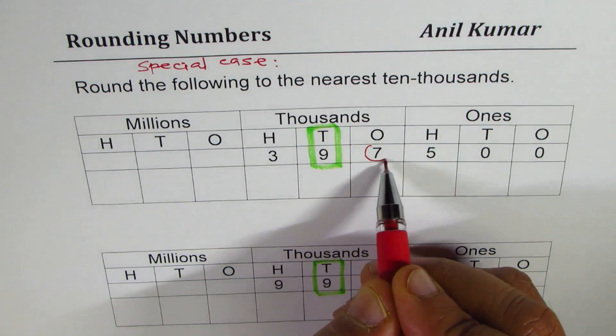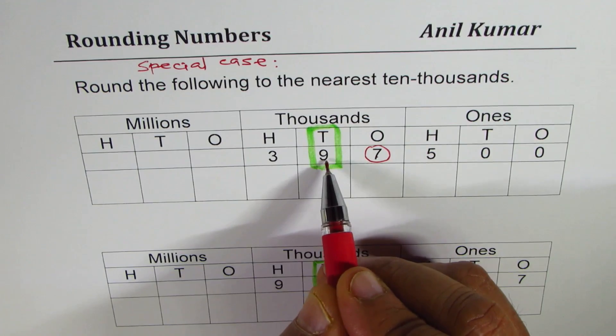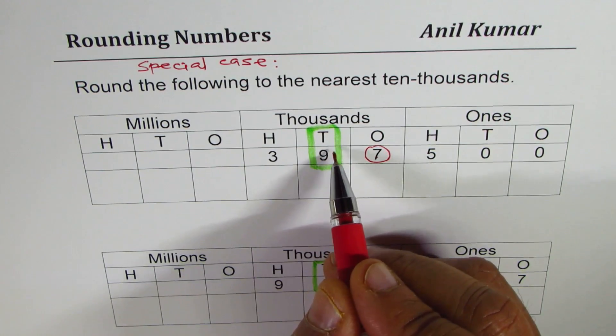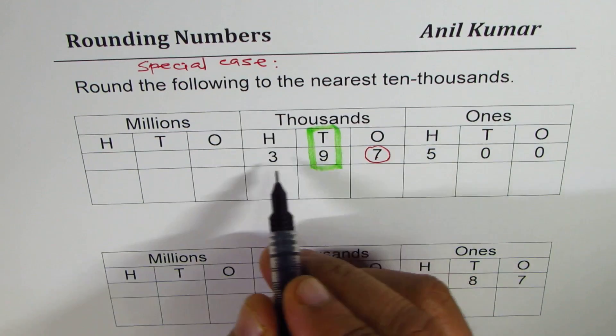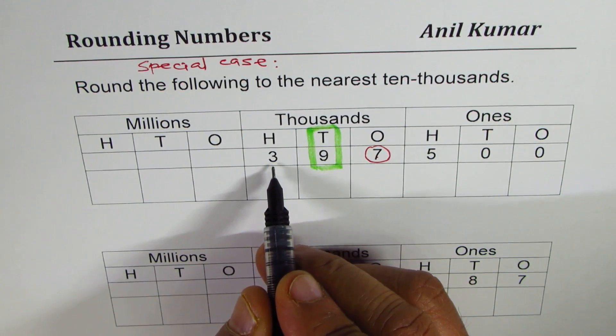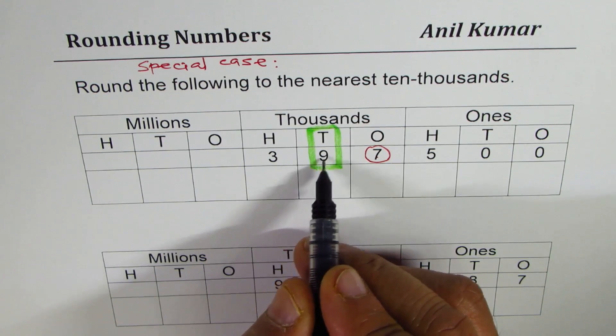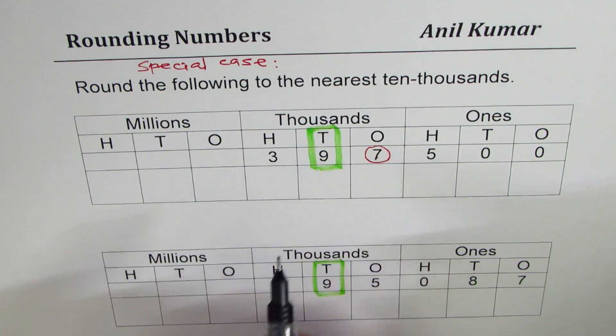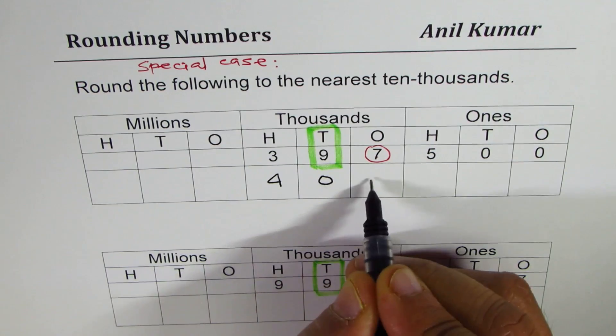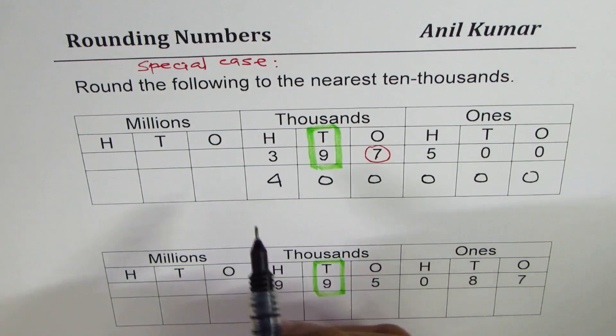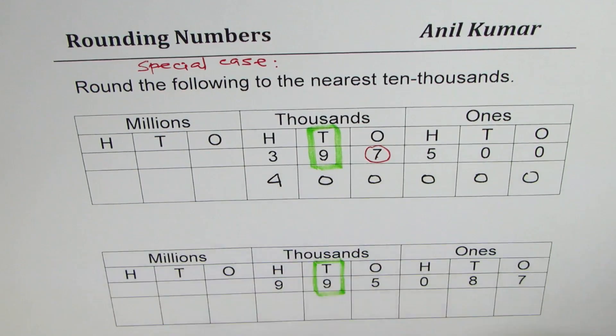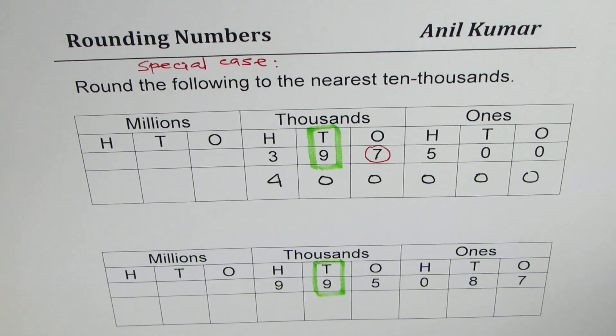Rounding to 10,000. So I have to look at the number on the right. It is seven. I have to round it higher. So nine becomes 10. Nine becomes 10. That means my number in thousands place also changes. Nine becomes 10, 39 becomes 40,000. So it rounds to 40,000. So these are the times when the numbers to the left of place value you are looking at may change. So when there is nine, you have to be very careful.